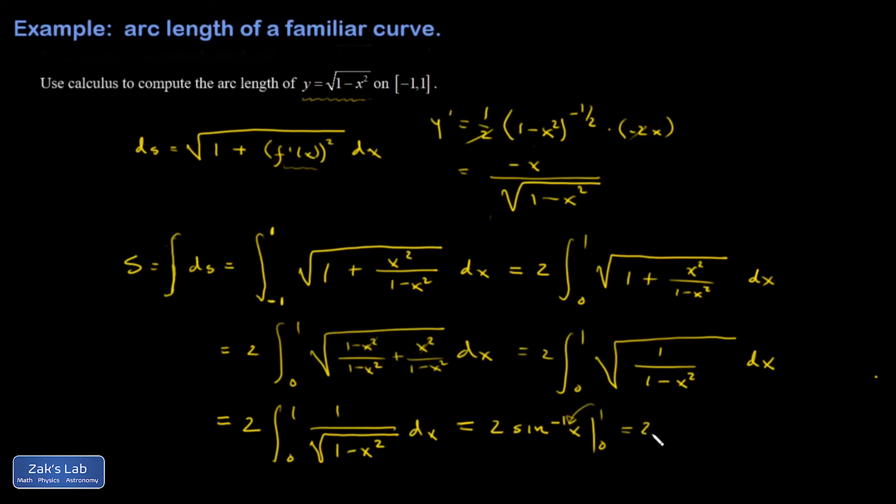Well, that's pi over 2. So 2 times pi over 2. And then when I sub in the lower limit, the angle whose sine is 0. That's 0. And so I end up with pi for my answer.